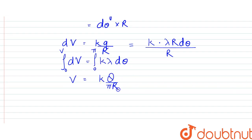So V can be written as k × λ × π. λ is given as q by πr. So q by πr into π. π gets cancelled, so it is kq by r.